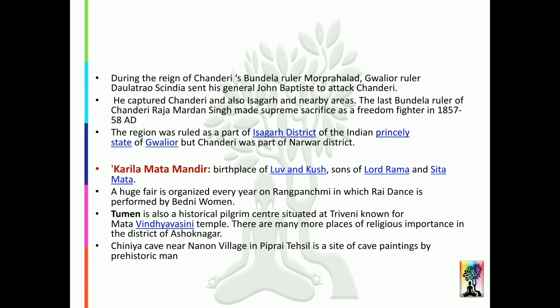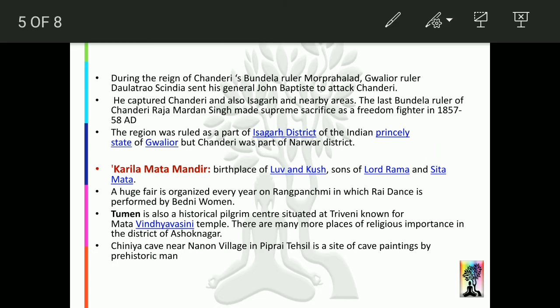Gwalior rulers attacked Chanderi — their general's name was John Baptist. The last Bundela ruler, Raja Mardan Singh of Chanderi, made the supreme sacrifice as a freedom fighter, so there can be a question about who he was. The region was ruled as part of the Isagar district of the princely state of Gwalior, while Chanderi was part of Narwar district.